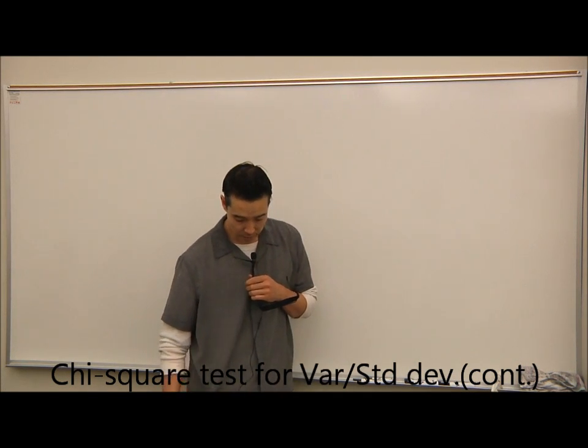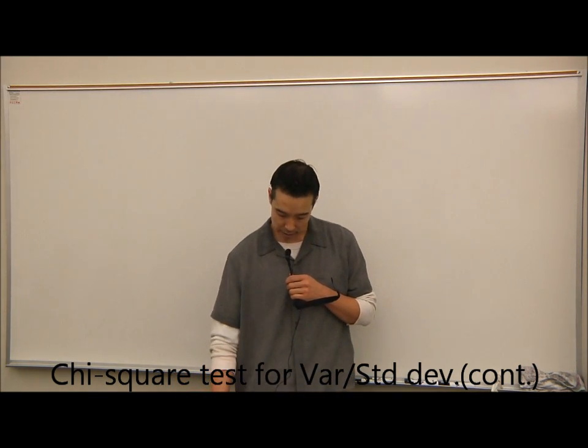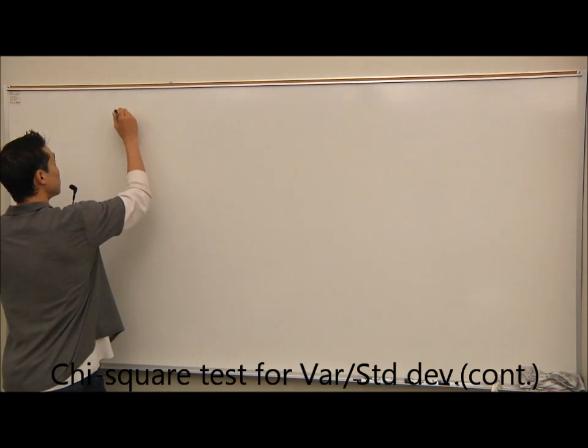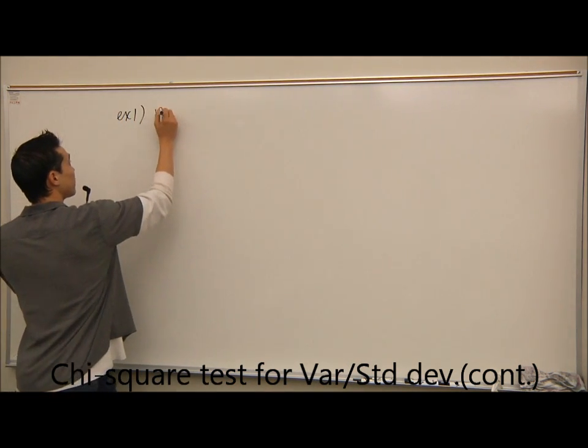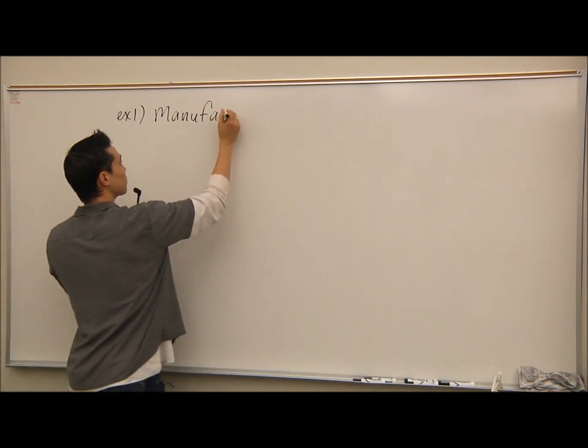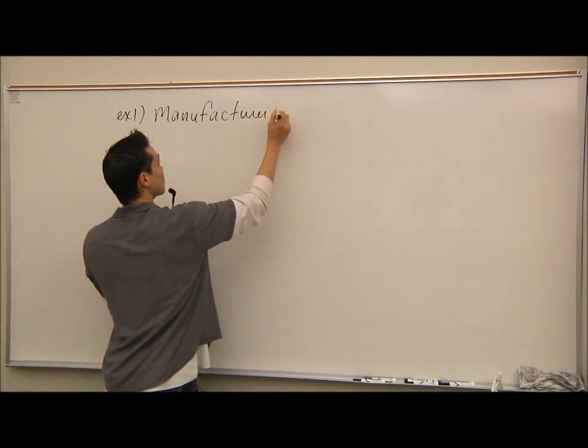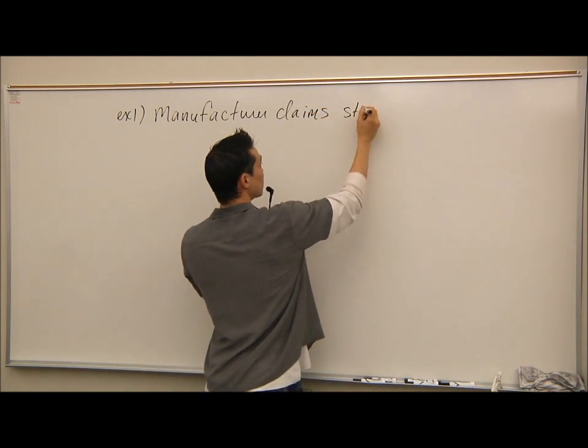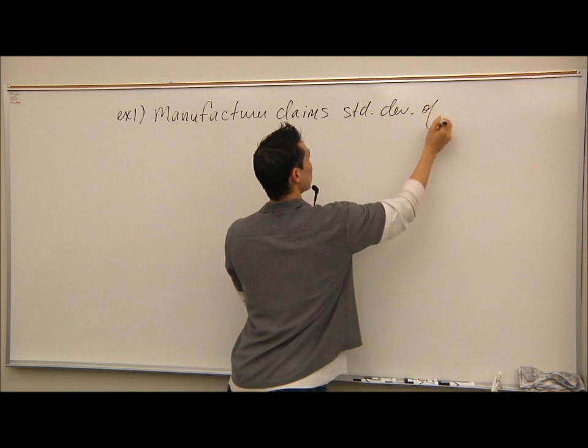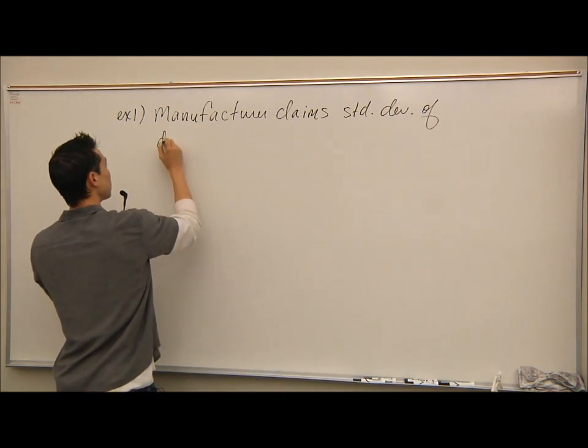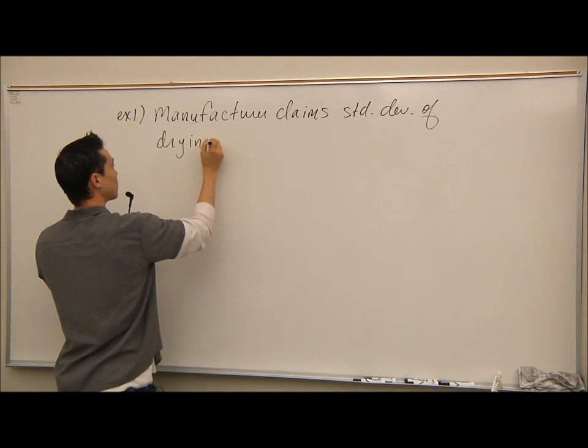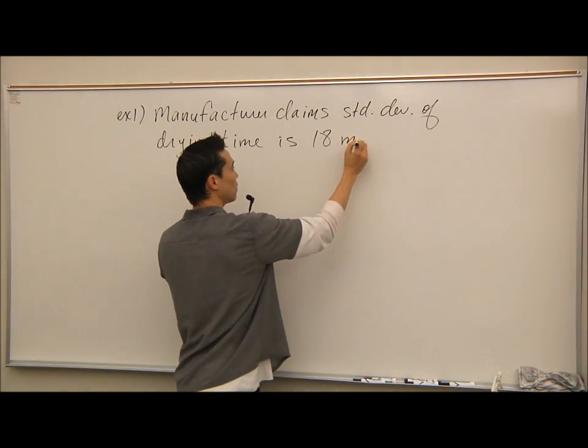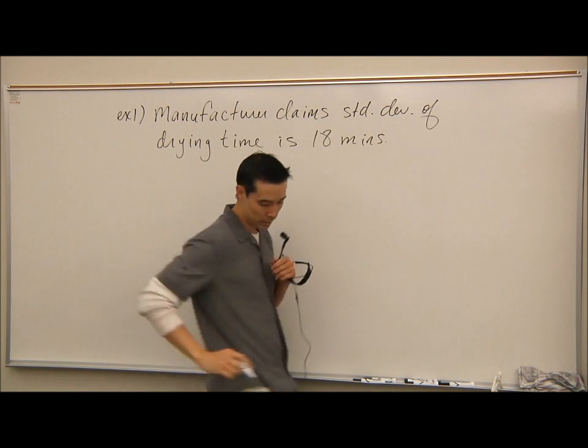Okay, let's do example one here. A manufacturer claims the standard deviation of the drying time of a certain type of paint is 18 minutes. Example one, manufacturer claims the standard deviation of drying time is 18 minutes.